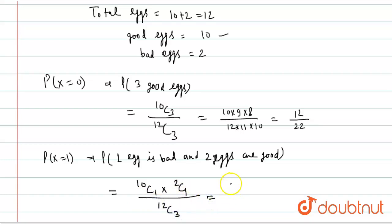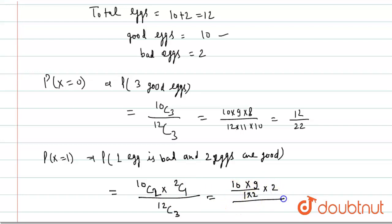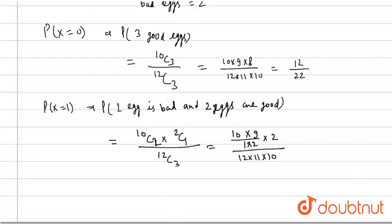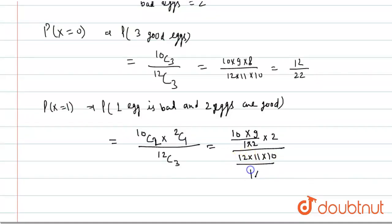P(X = 1) equals 10C2 × 2C1 divided by 12C3. This is (10 × 9 / (1 × 2)) × 2, divided by (12 × 11 × 10) / (1 × 2 × 3). The 1 × 2 terms cancel out, giving us 9/22.